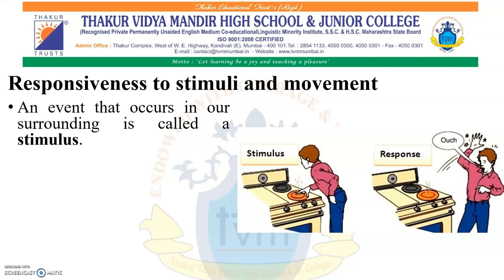An event that occurs in our surrounding — as shown in the picture, the event taking place is a person touching the hot stove. So in this case, the stimulus is touching the hot stove. And what is the response of that person? Obviously, he is getting burnt.